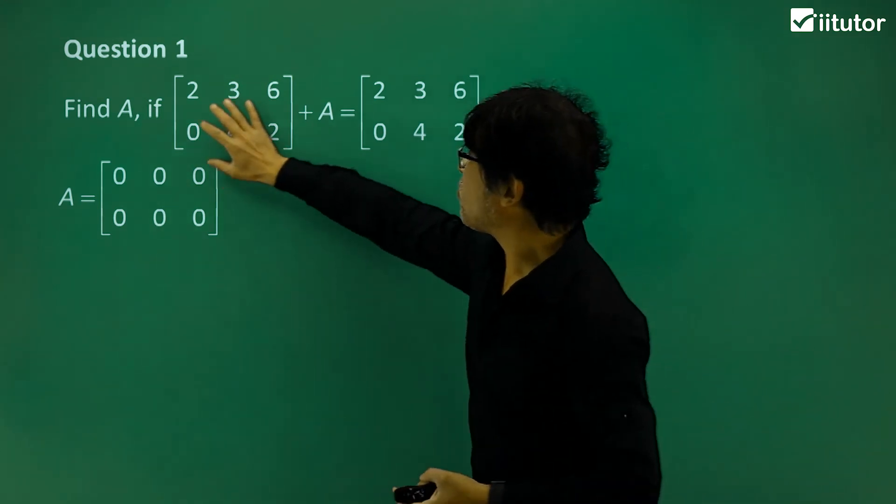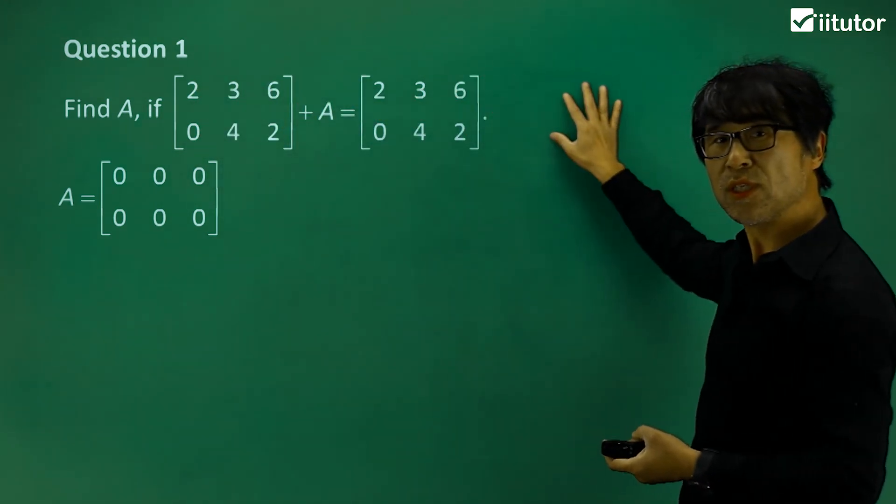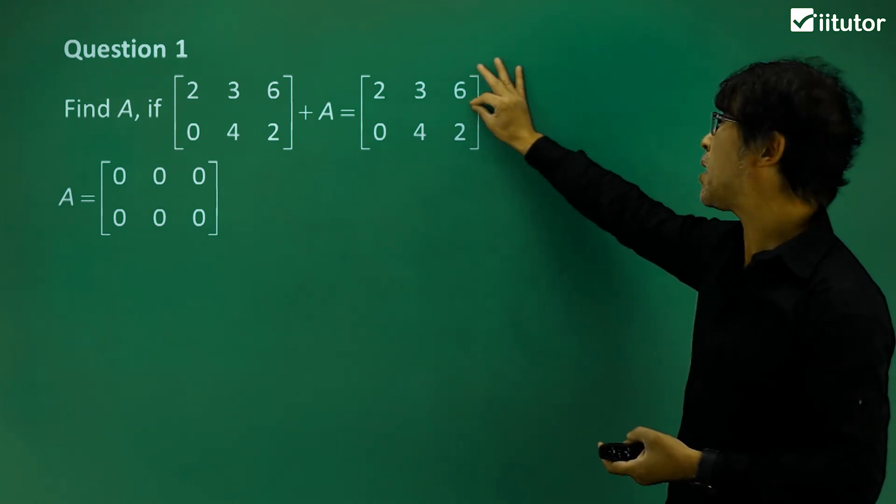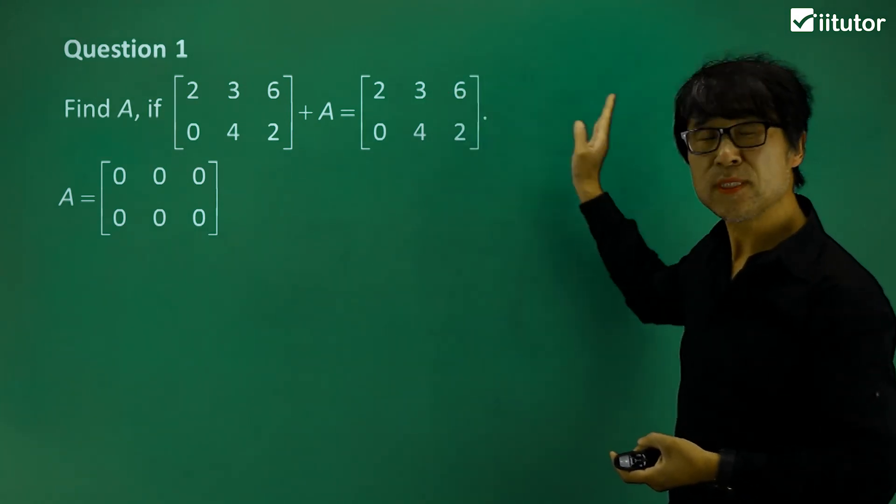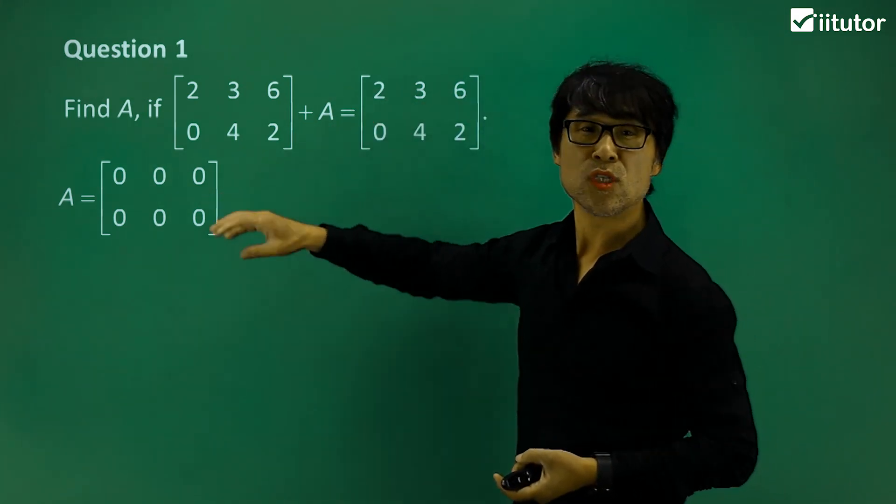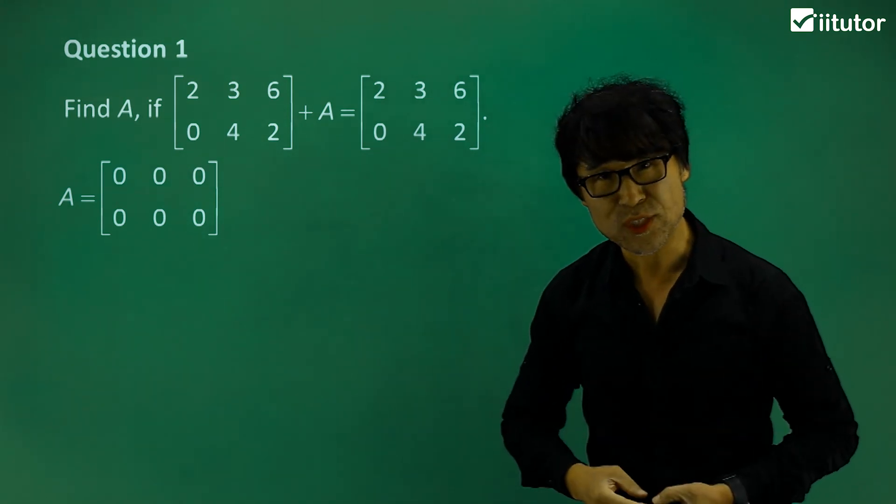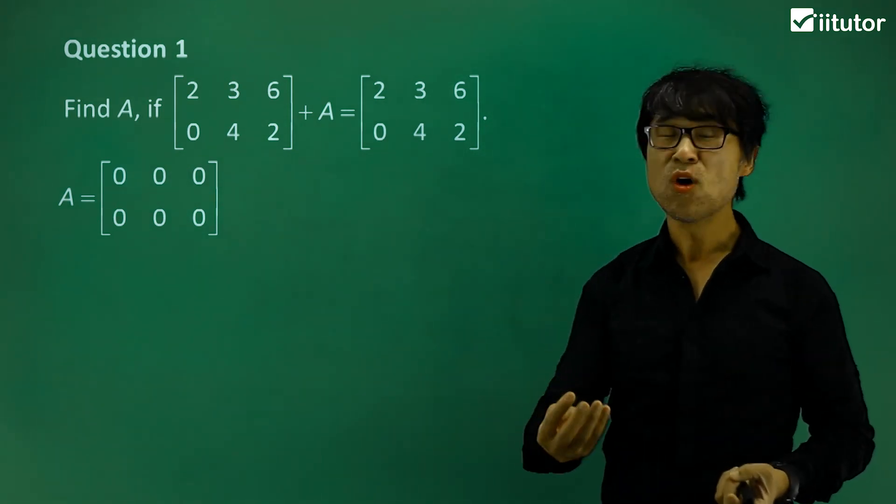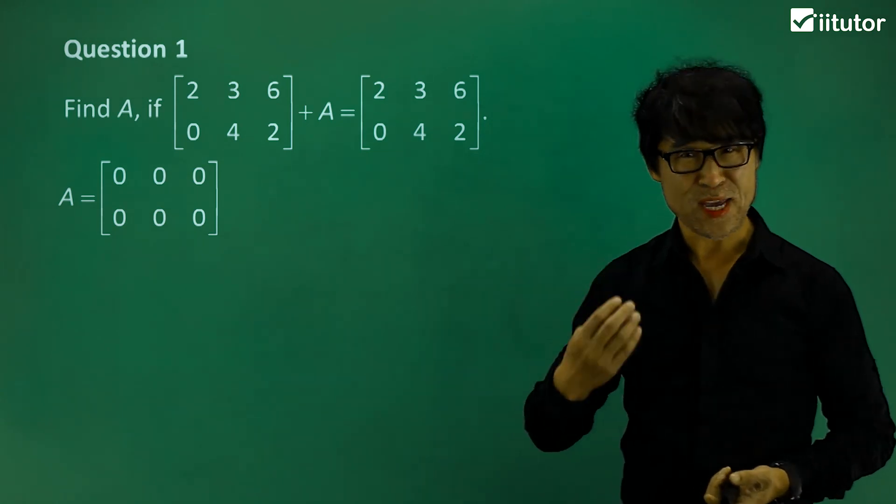So if you think, if you move this matrix over to here and make it negative, make it minus it, it will be zero. So that's how you obtain zero matrix or null matrix. So that's an example of the zero or null matrix.